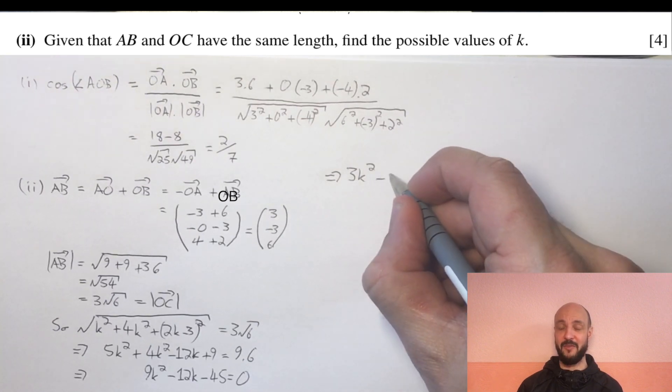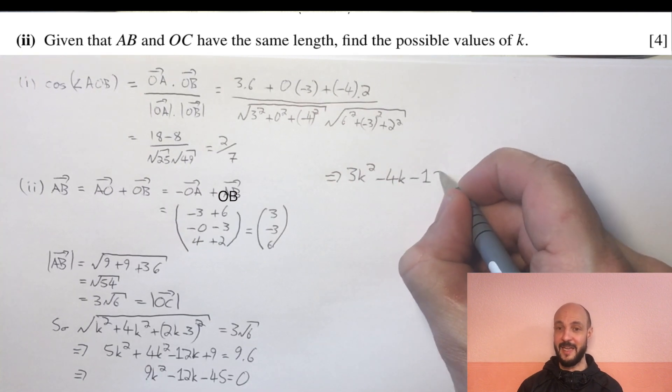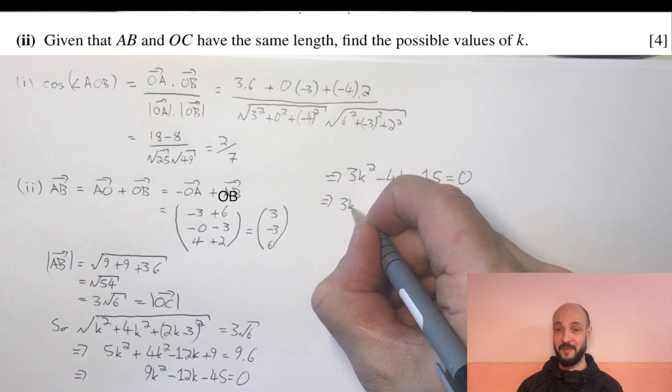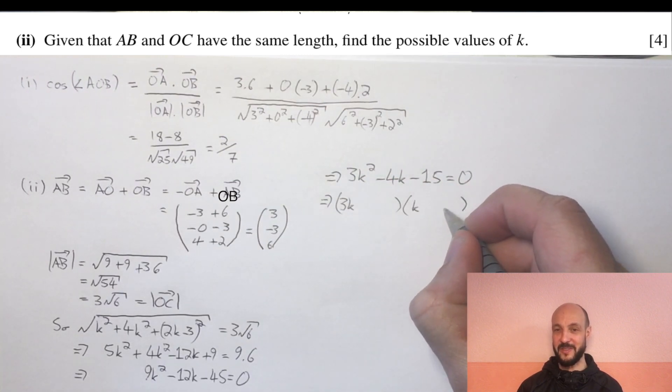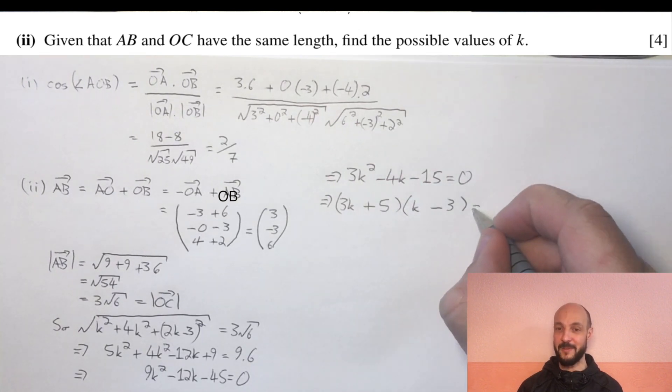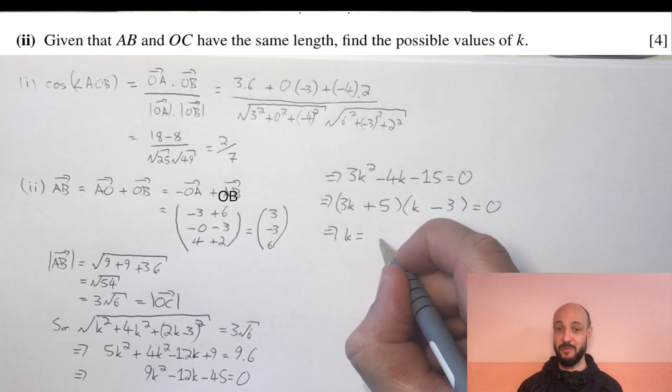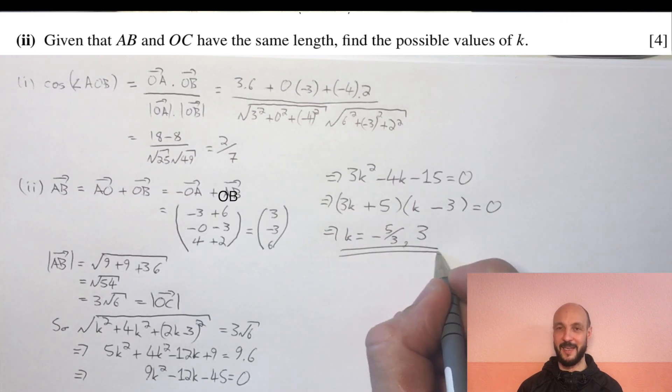We can divide through by 3 to give us 3K squared minus 4K minus 15 equals 0. We'll factorize the left side. If we put two brackets there, put in the 3K and the K, we need to get 15. Factors of 15 are either 15 and 1 or 5 and 3. 5 and 3 are useful here, giving us 3K plus 5 times K minus 3. That tells us the roots are K equals 3 or minus 5 over 3.